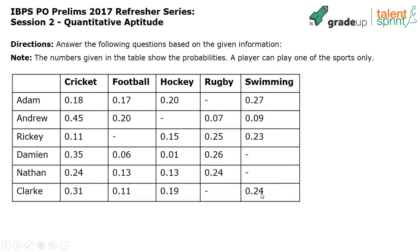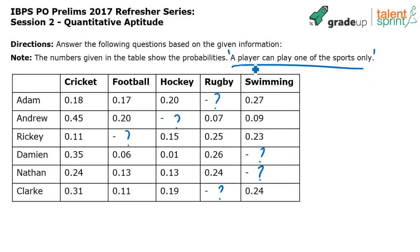There is some missing data in the table. Questions on missing data have been asked in recent exams, and this data is not directly missing — it can be found indirectly from the given information. The key point is that a player can play only one of the sports.